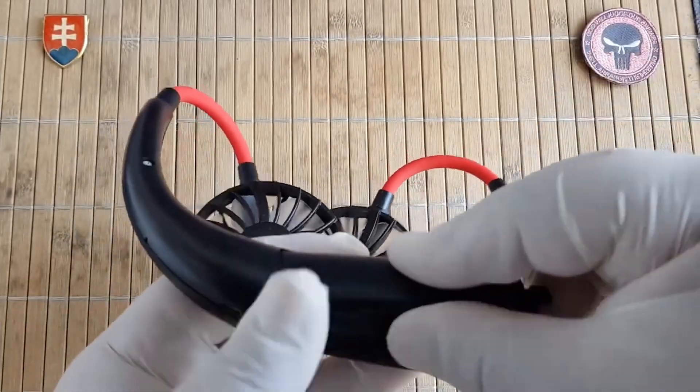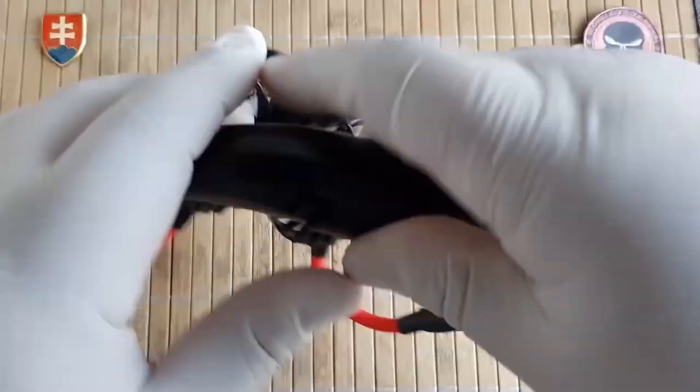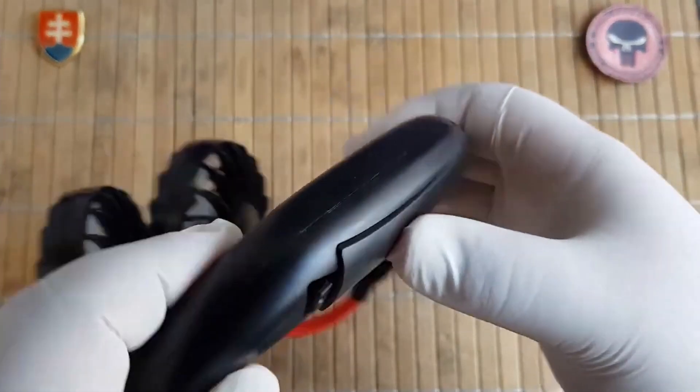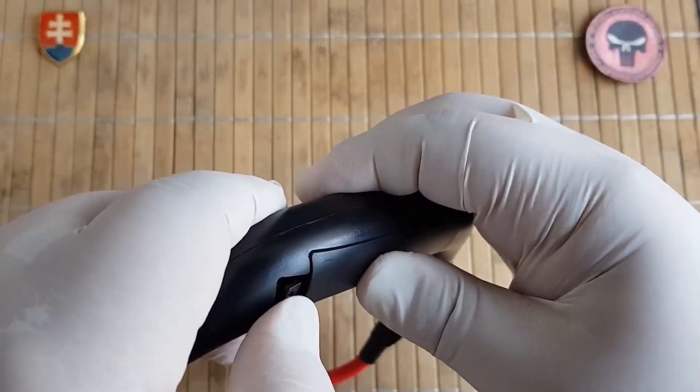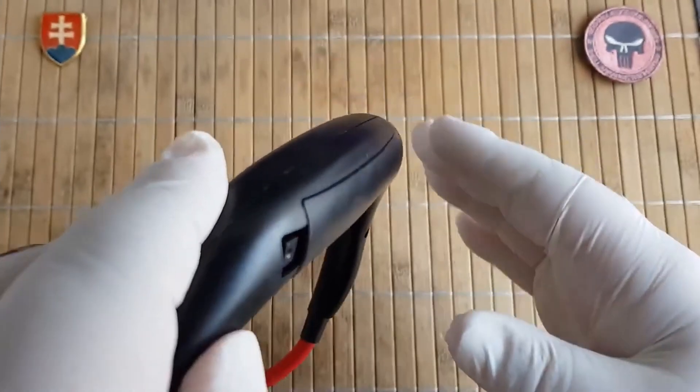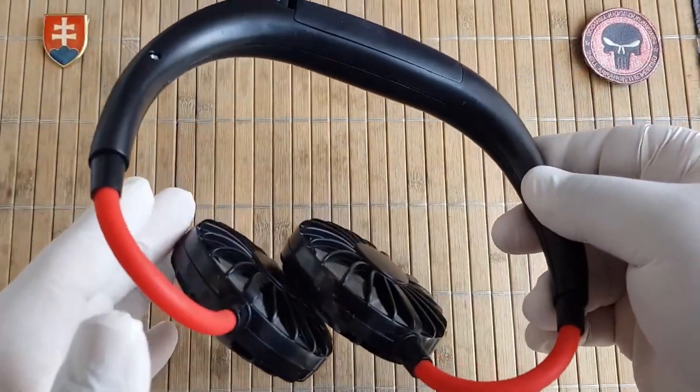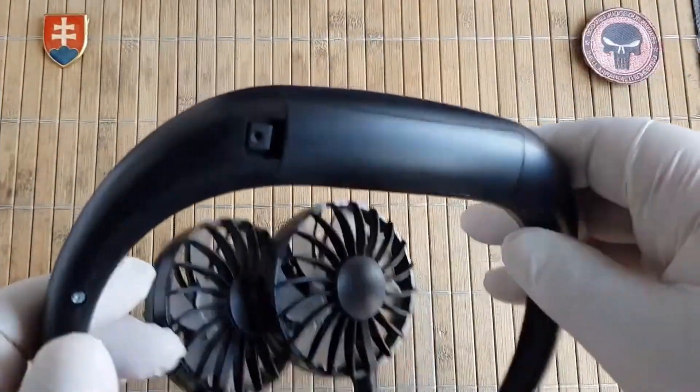This portable mini fan is very compact but offers three perfectly adjustable wind speeds. Thus, it suffices to activate its on-off switch. In addition, it is equipped with a powerful 2,000mAh battery. In this way, you get 2.5 to 6 hours of optimal operation.